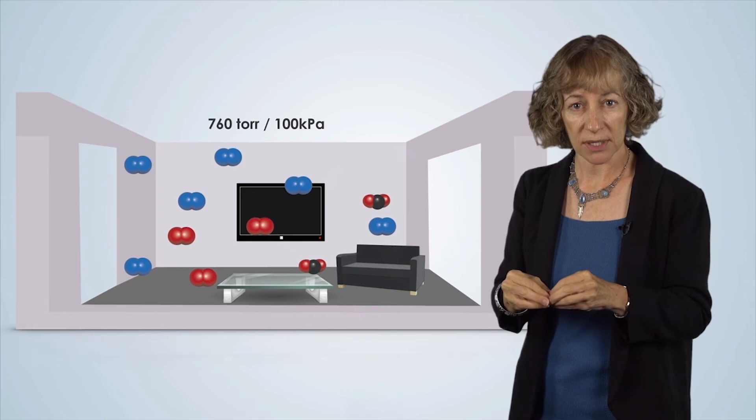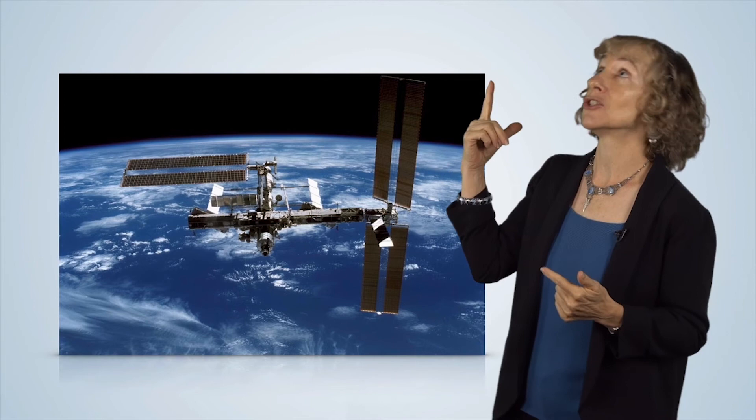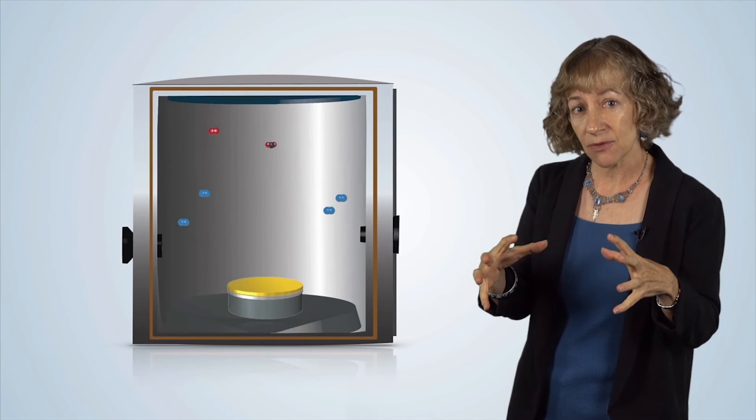How does the high vacuum that we use for thin film deposition compare to outer space? Well, at the International Space Station, the pressure is 10 to the minus 9 torr. In our high vacuum systems for nanofabrication, we typically use pressures of 10 to the minus 7 torr. The other difference? There's gravity in our vacuum systems.